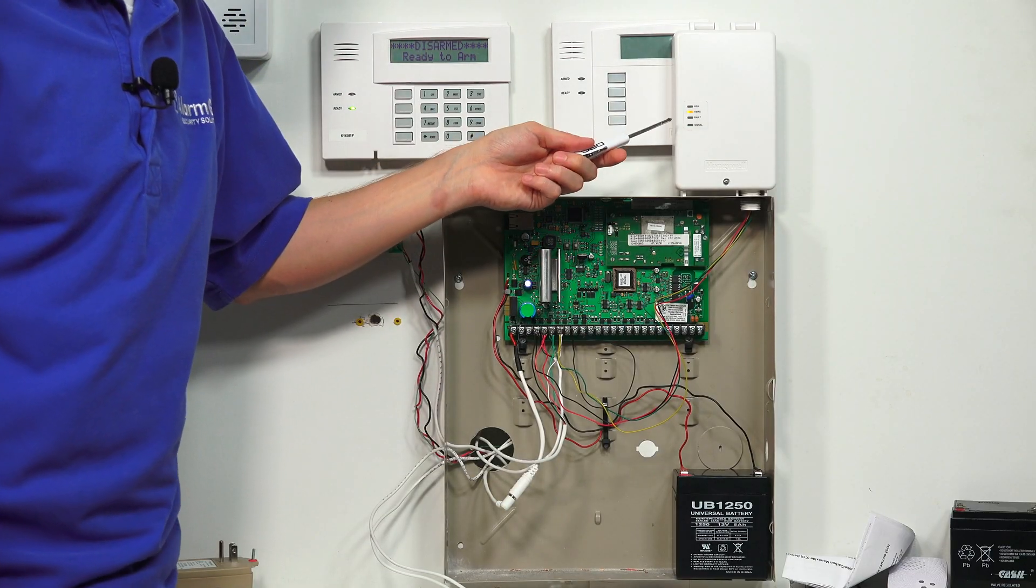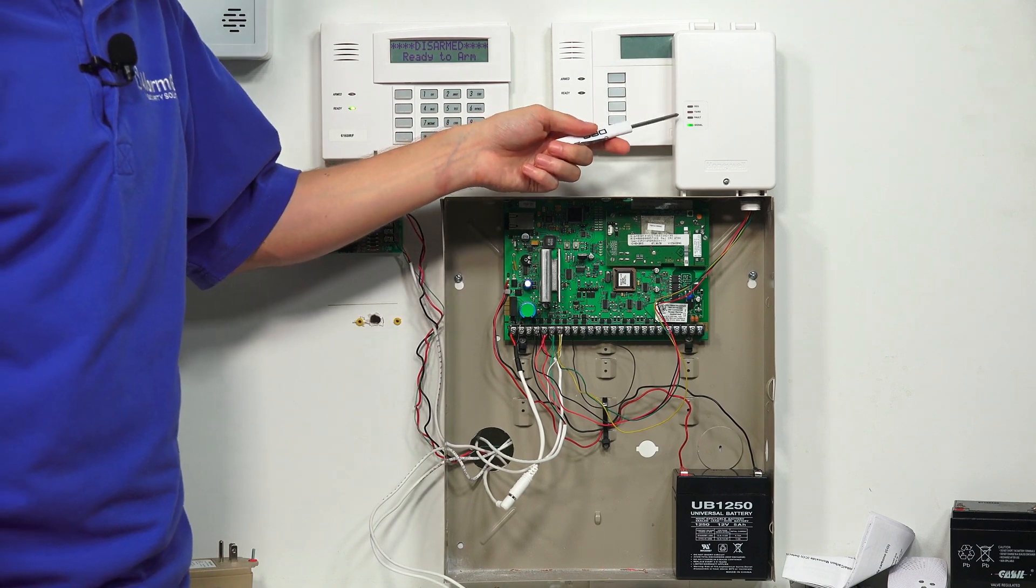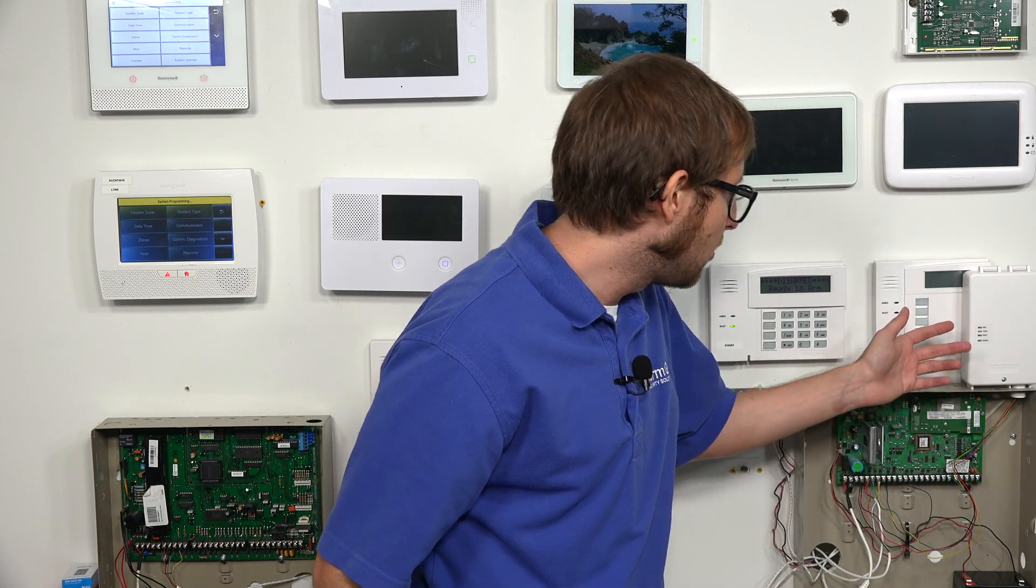So you will want to check the LED lights on the communicator to verify cell signal strength. For most people, this won't be a concern. Most areas get covered pretty well by the LTE networks, whether using AT&T or Verizon. But if you are in a rural area or you have the panel tucked away, maybe in a closet or something, then it can be hard to get a good cell signal. So make sure to check the LED lights and refer to the manual for more information of what they mean.